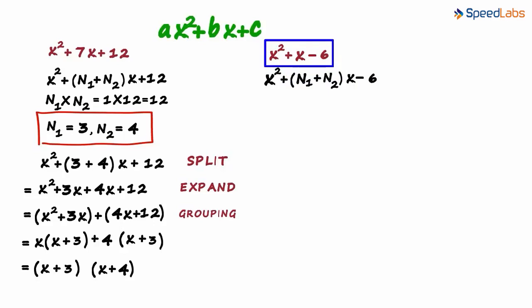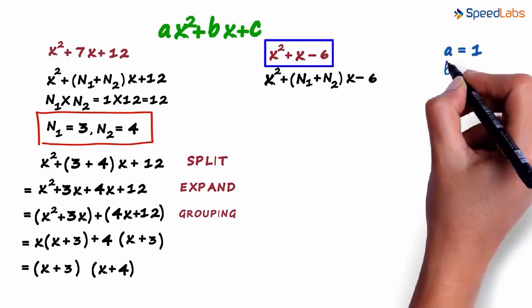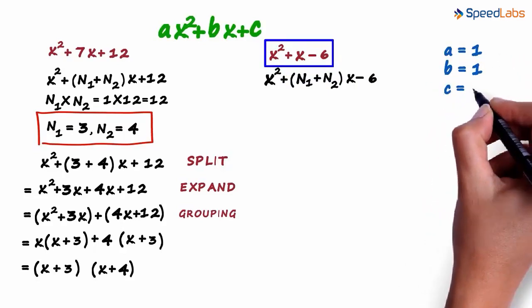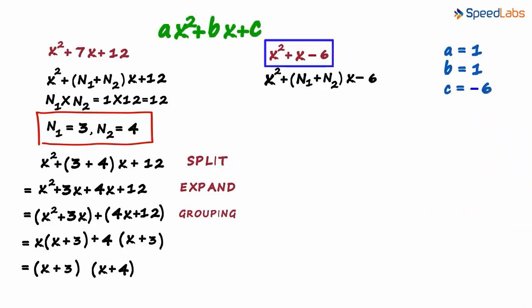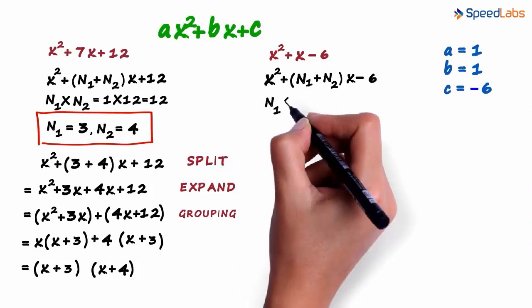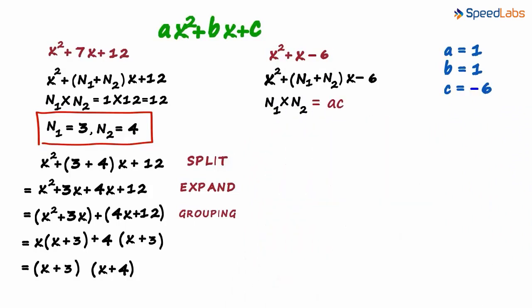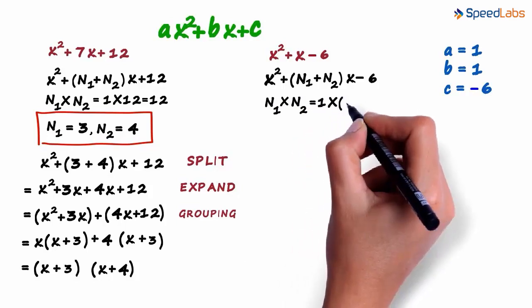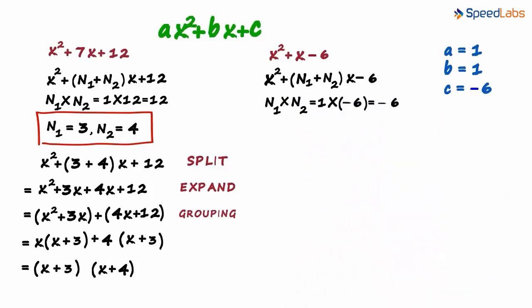In this polynomial, a is 1, b is also 1, and c is minus 6. But we have a condition that says n1 multiplied by n2 equals a multiplied by c. So we write it as 1 multiplied by minus 6, which is minus 6.